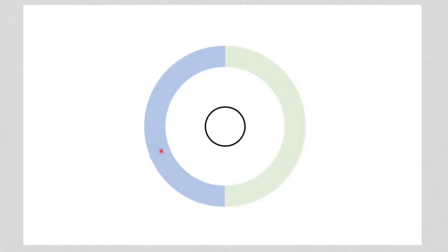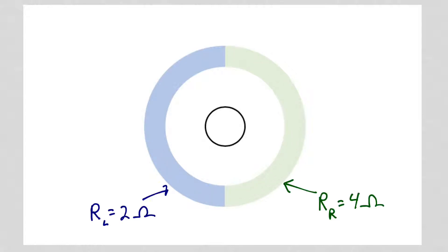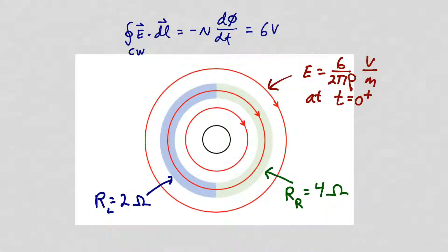Now let's surround the solenoid with a conducting ring again, but this time the ring is made out of two materials. The material on the left has a higher conductivity than the material on the right, such that the resistance of the left half ring is 2 ohms and the resistance of the right half ring is 4 ohms. The solenoid current is zero for time less than zero, and for time greater than zero it is ramped to produce an electromotive force of 6 volts.